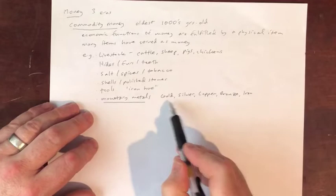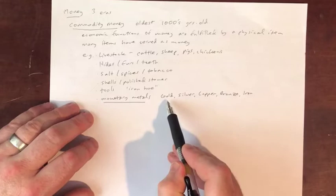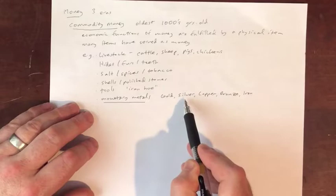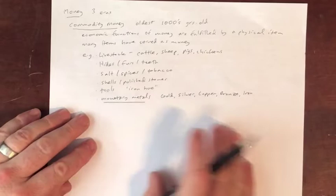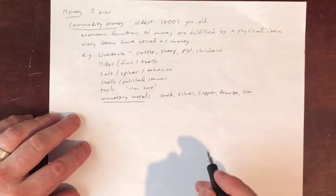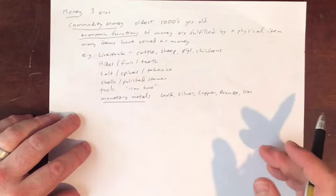These metals stand in relation to one another — gold buys a certain amount of silver, which buys a certain amount of copper, bronze, iron, and so on. Now let's get into the economic functions of money — what purpose do they fulfill in the economy?